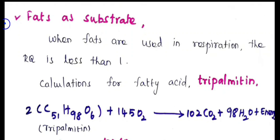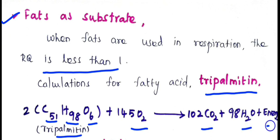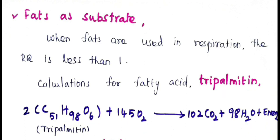Next we will calculate RQ for fat. When fats are used in respiration, the RQ is less than 1. Consider the calculation for the fatty acid tripalmitin. The formula for tripalmitin is C₅₁H₉₈O₆. The balanced reaction is: 2 C₅₁H₉₈O₆ plus 145 O₂ gives 102 CO₂ plus 98 H₂O plus energy.